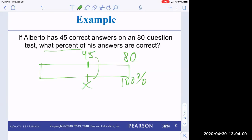Again, X over 45 is equal to 100 over 80. 56.25%. And I already knew it was a little over 50%. So that seems good.